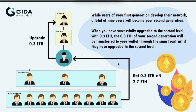You may also upgrade your Jida account for higher returns. So the first task is to refer three people to join as Jida users with 0.12 Ethereum, and what they contribute comes to your wallet. Now looking at the chart — this is you — we're talking about upgrading. Beside the first task of 0.36 earned from three people, while users of your first generation develop their network, a total of nine users will become your second generation.